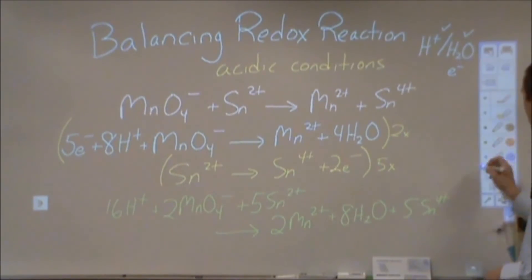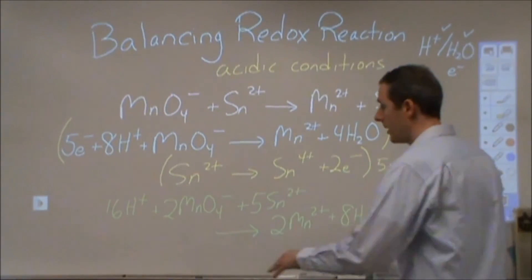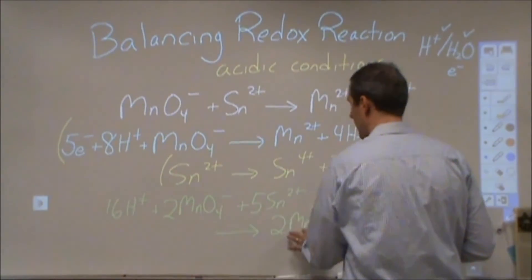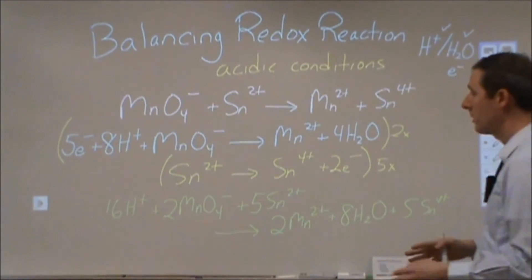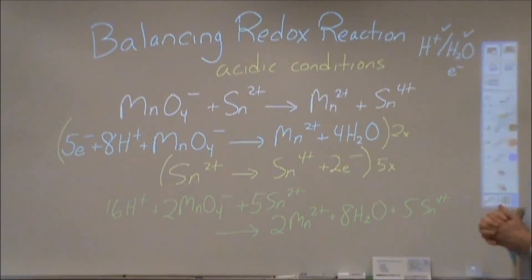Now when we're done here, what you should note is that not only have we got sixteen hydrogens, two manganese, five tins, and eight oxygens on both sides, but our charges should add up.